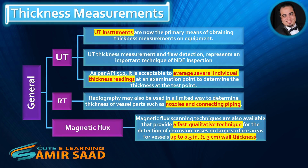Magnetic flux scanning techniques are also available that provide a fast qualitative technique for the detection of corrosion losses on large surface areas, for vessels up to 0.5 in (1.3 cm) wall thickness.